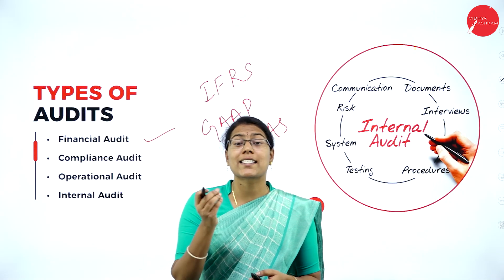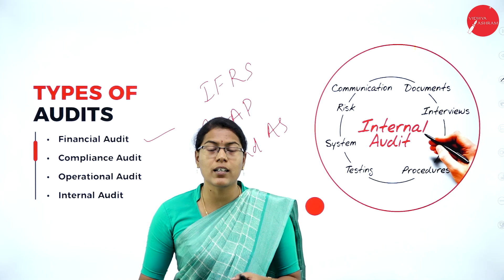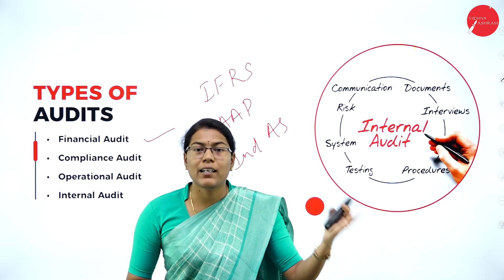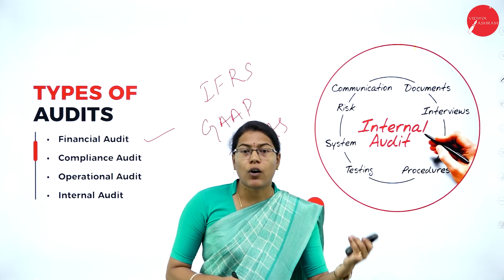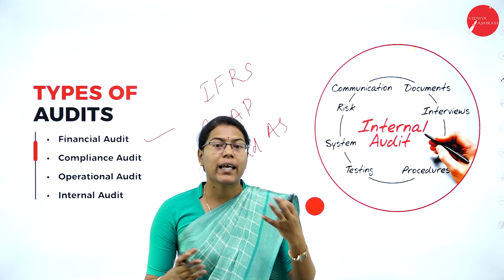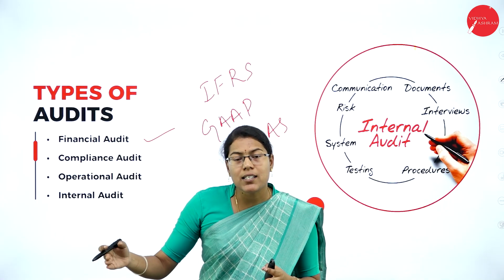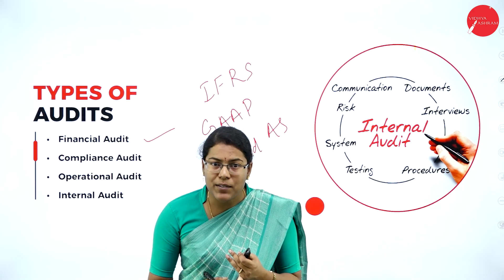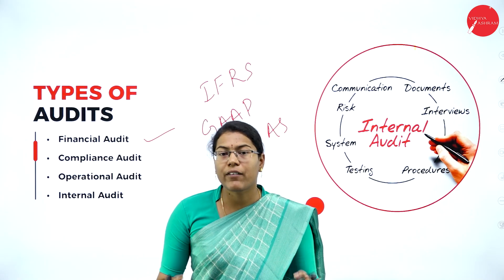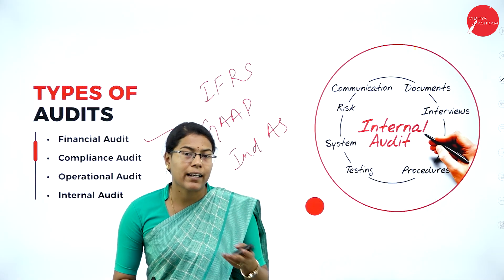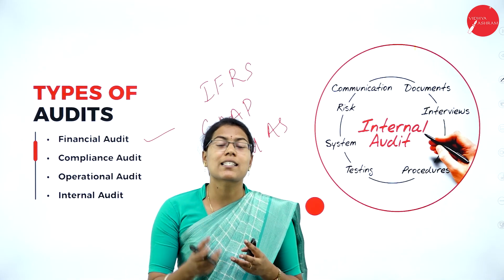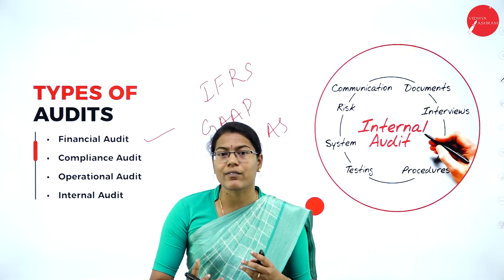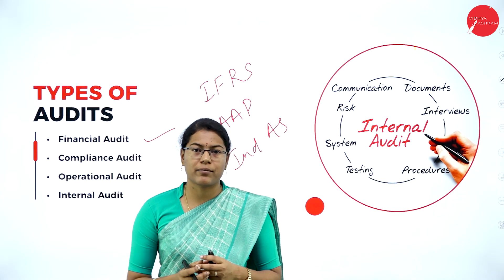This type of audit is typically conducted by the external auditor who is independent of the business organization. For example, take any retail businesses like Walmart, or Big Bazaar, or Meesho. The auditor may audit the number of sales that have happened, total expenses, or the inventory levels, and verify that the profit levels are correct. It also helps to gain the trust of shareholders and other stakeholders, who believe that the financial statements are true and fair.